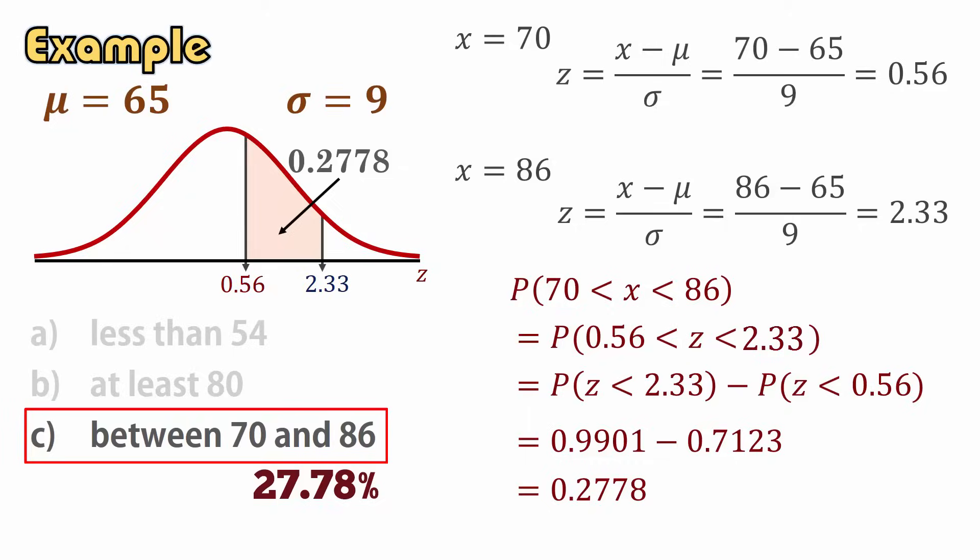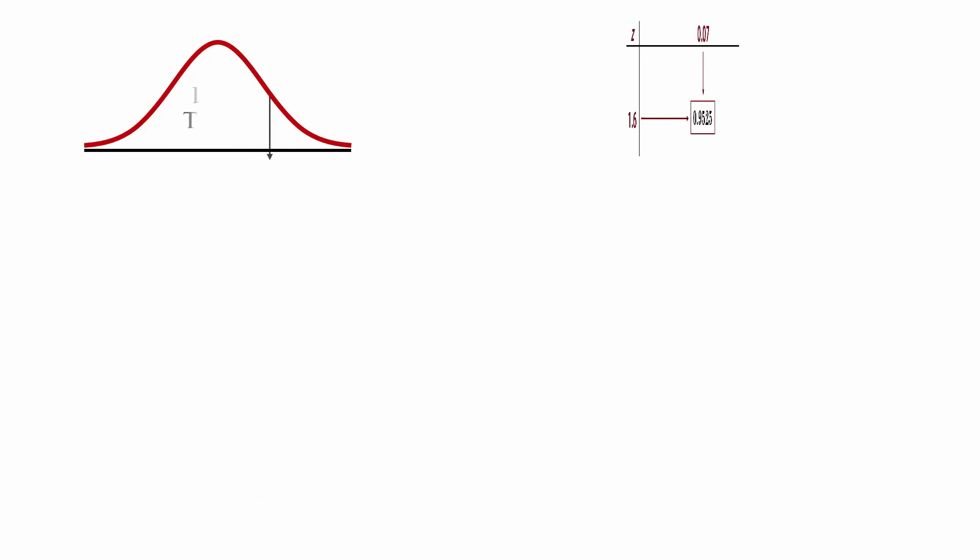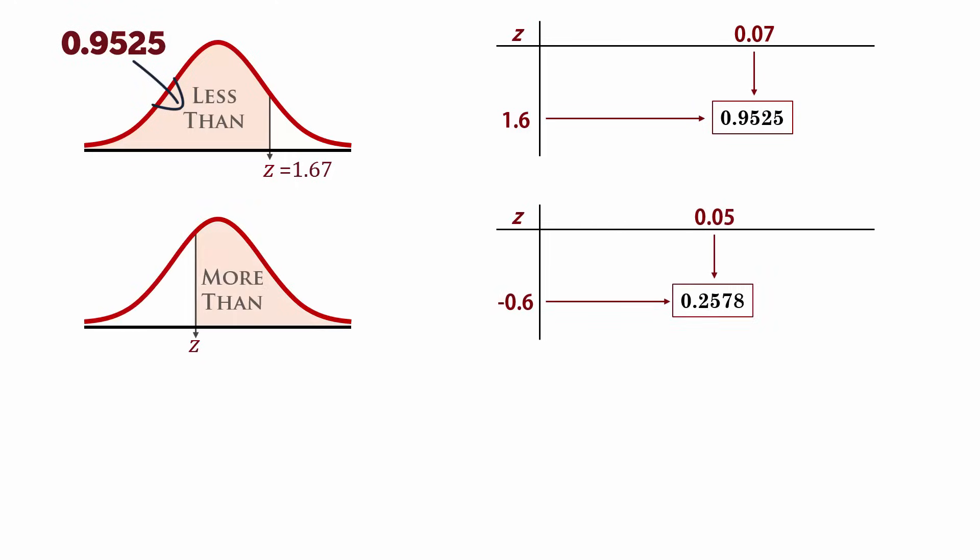In summary, if you're finding a less than area, using the cumulative less than tables, the area in the table is the answer. If you want a greater than area, then do 1 minus the area from the table.